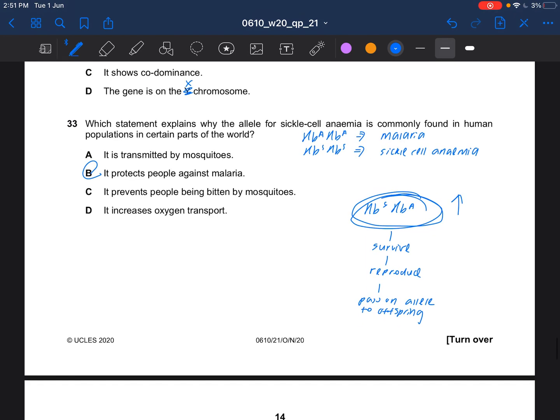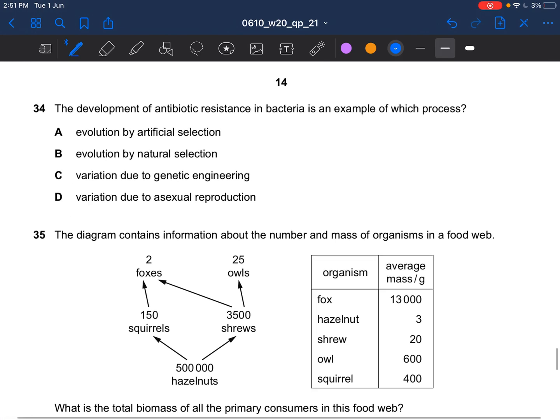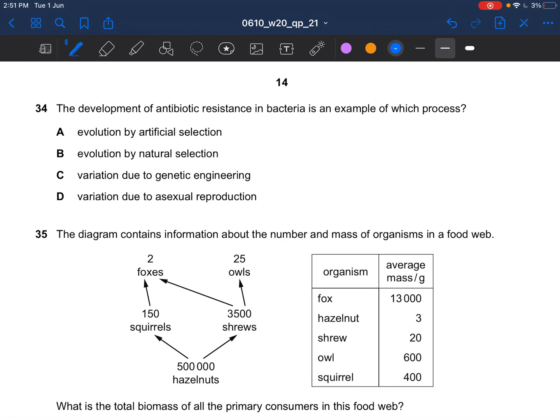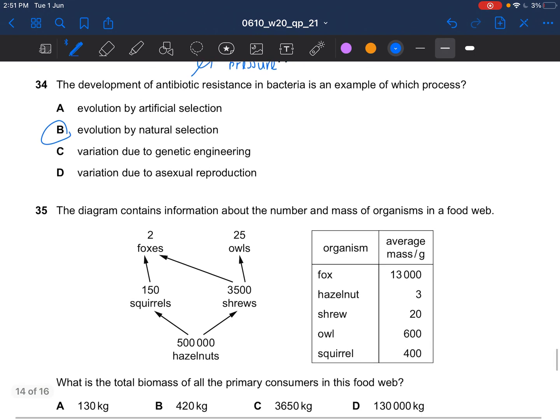Next question. The development of antibiotic resistance in bacteria is an example of which process? It is natural selection. Antibiotic resistance occurs due to environmental pressure. It occurs naturally.